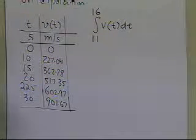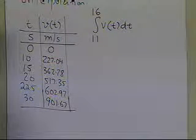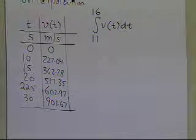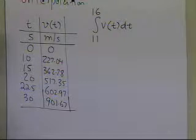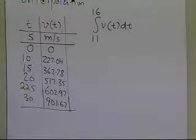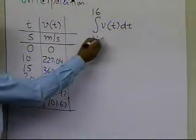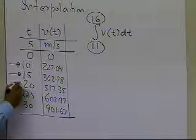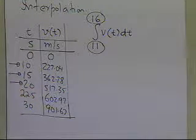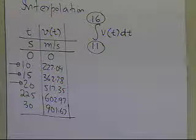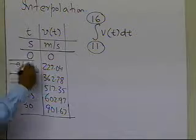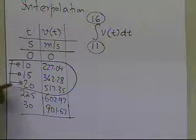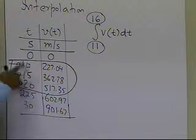The polynomial interpolation method is about choosing the correct points to perform this integration. Since we are doing polynomial interpolation, you might use a first-order polynomial, second-order polynomial, and so on. We are integrating from 11 to 16, and we know the velocity at t=10, t=15, and t=20, which encompasses the integration interval.